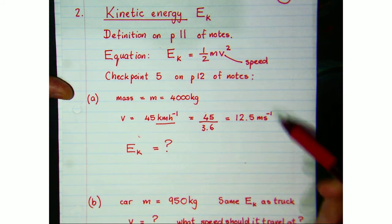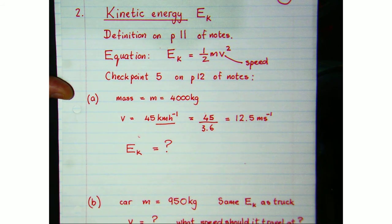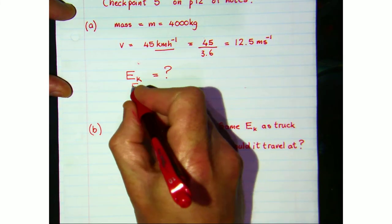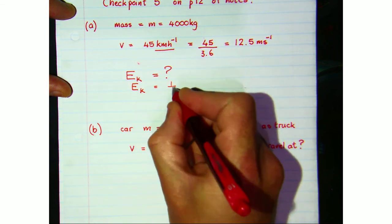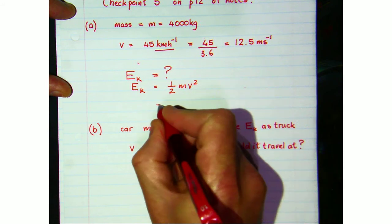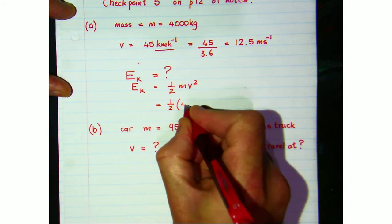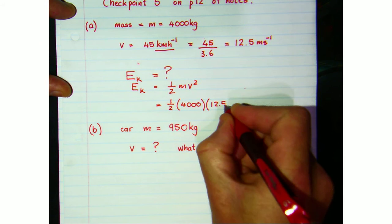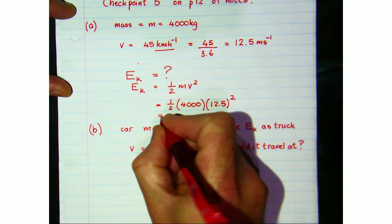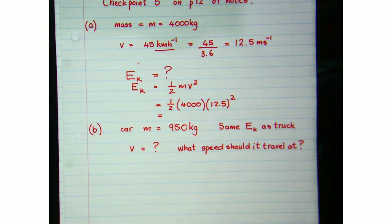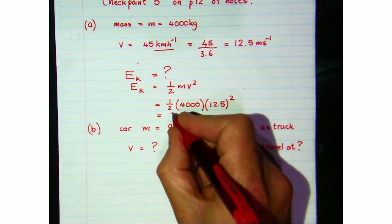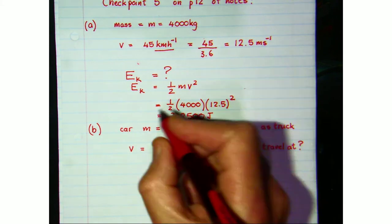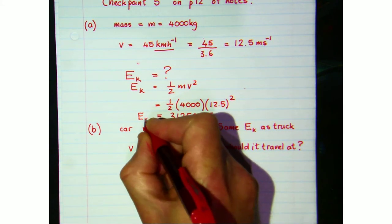It's really important in the exam to convert kilometers per hour to meters per second. So how much kinetic energy does this truck have? Using EK = ½mv²: half times 4,000 times 12.5 squared — don't forget to square that — gives an answer of 312,500 joules. That's how much kinetic energy it possesses traveling at that speed.